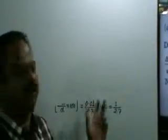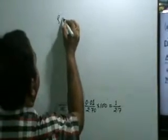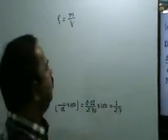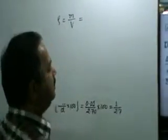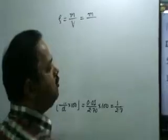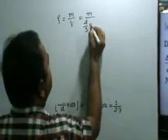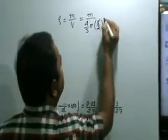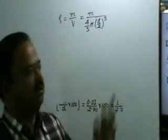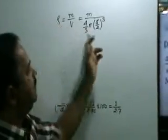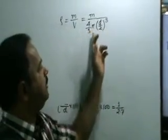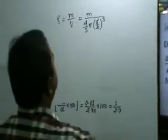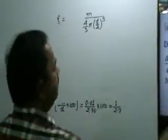Now what is density? Density = mass divided by volume. Mass is m, and the volume of a sphere is (4/3) π r³, where r = d/2. So we can write: rho = m divided by (4/3) π (d/2)³. This is the expression for density.